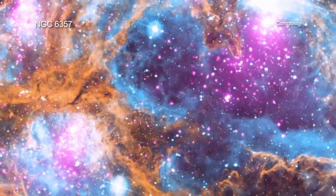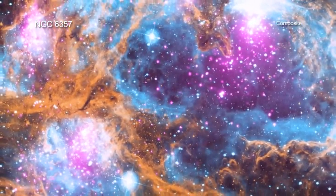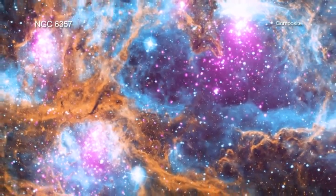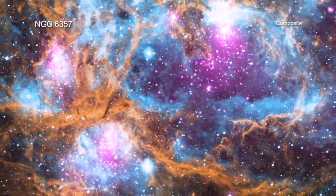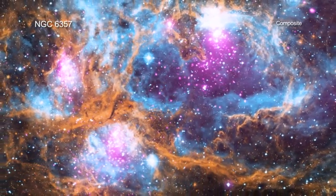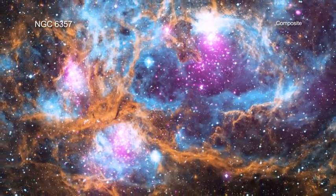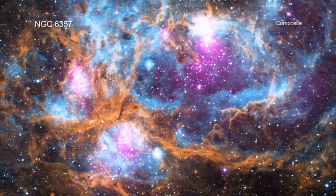Located about 5,500 light years from Earth, NGC 6357 is actually a cluster of clusters, containing at least three clusters of young stars, including many hot, massive, luminous stars.